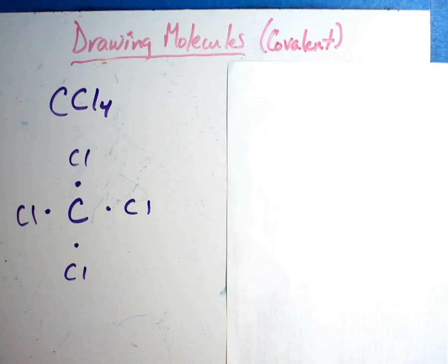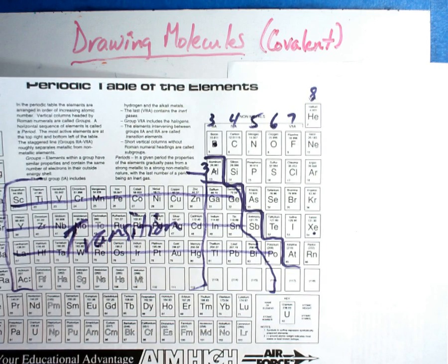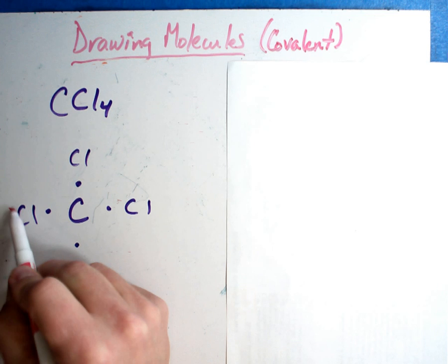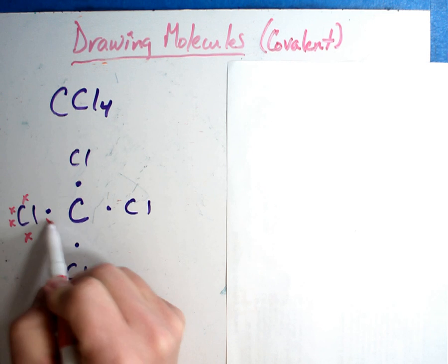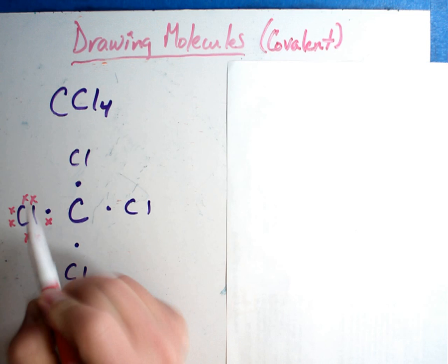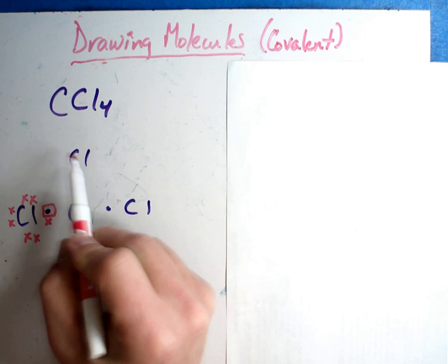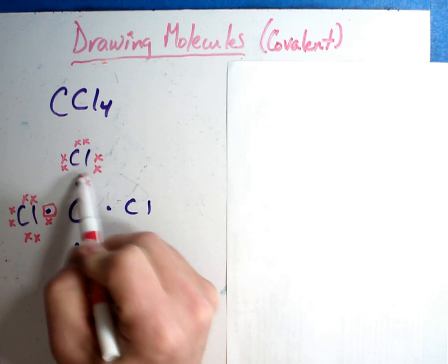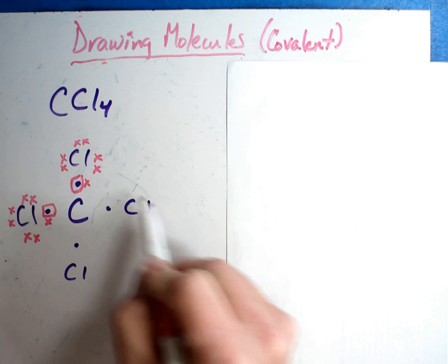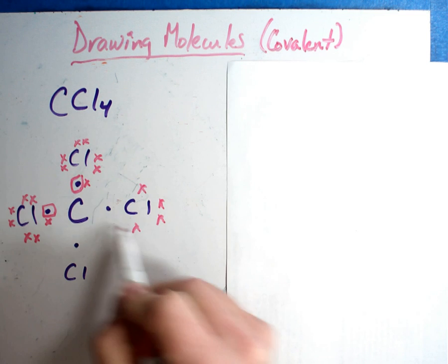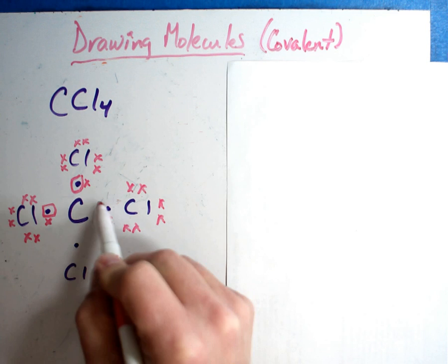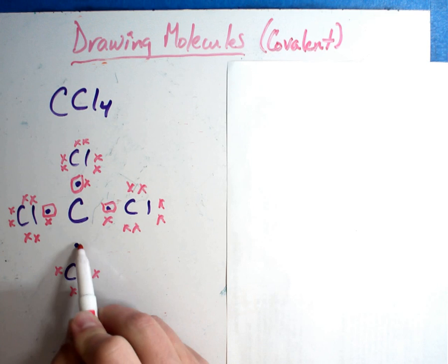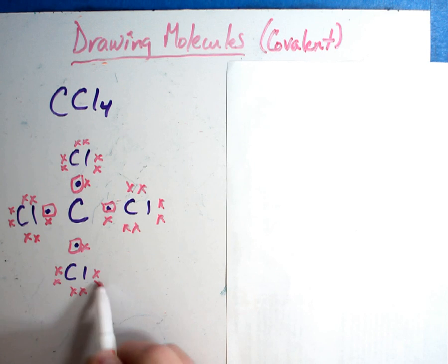Chlorine, on the other hand - each of those chlorines has seven valence electrons. So I'm going to go ahead and put them in: one through seven, and an empty spot. Notice how that fills the empty spot. Each chlorine gets seven electrons placed around it, with the empty spot filled by the shared electron from carbon. I repeat this for all four chlorines, filling each one with seven electrons plus the shared spot.